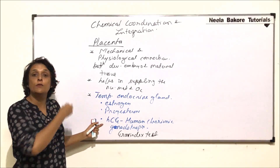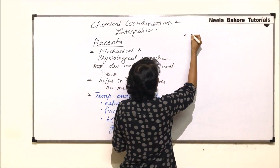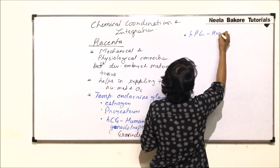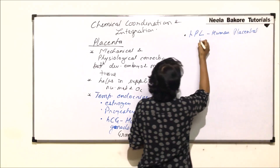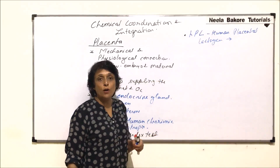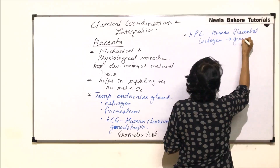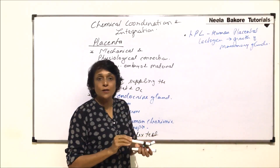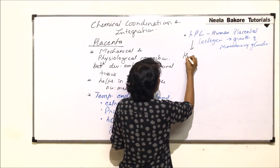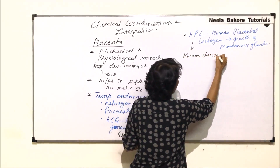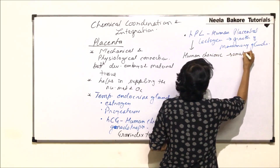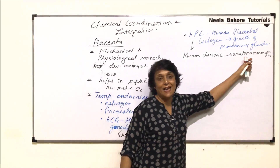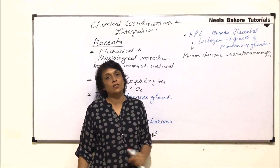The next hormone is known as Human Placental Lactogen (HPL). Because of the same function, this hormone is also known as Human Chorionic Somatomammotropin — meaning it stimulates the mammary gland so that after parturition, lactation is proper.